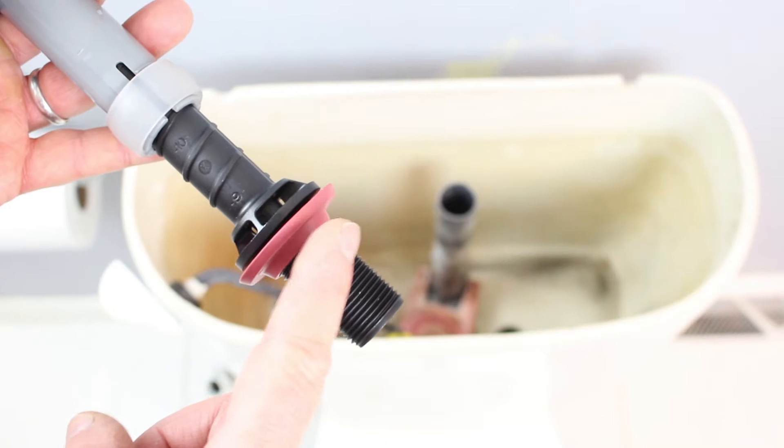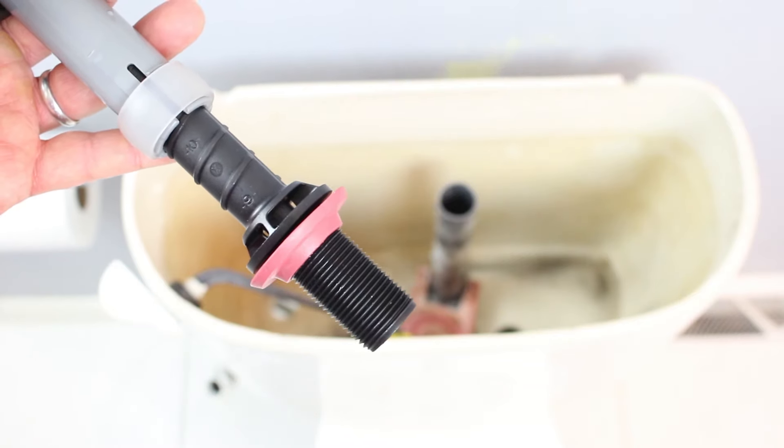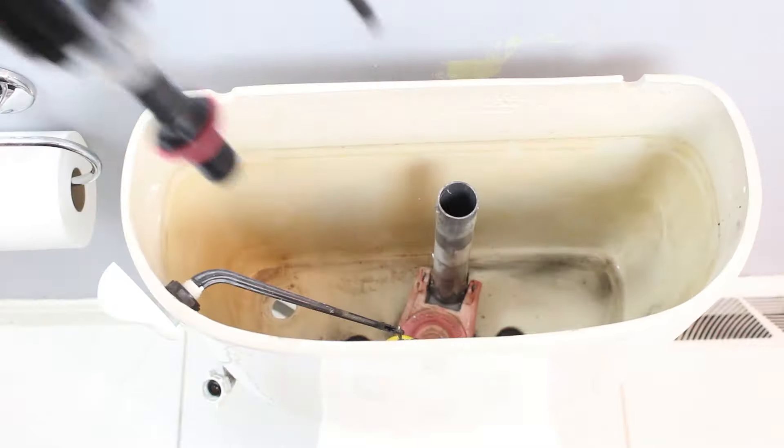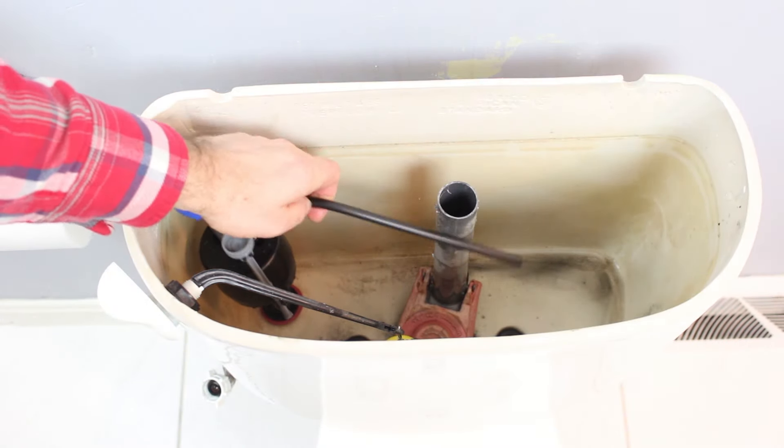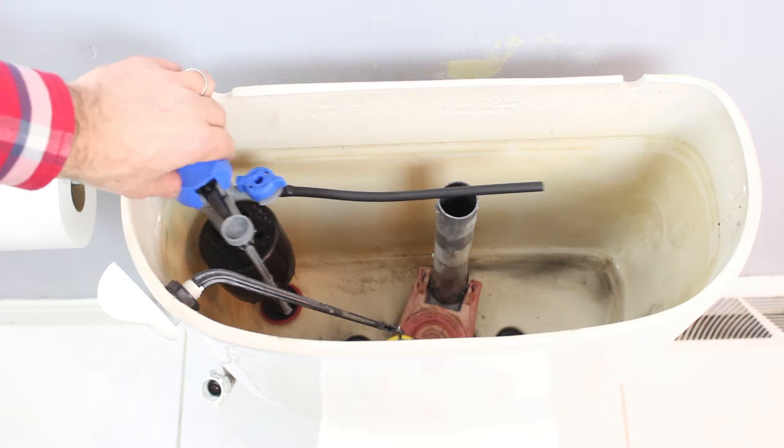Inspect the gasket on the new fill valve. It's usually in the right position, but just double check that that's the case, and then insert the 400H down into the tank and dry fit that hose. That's going to be important.